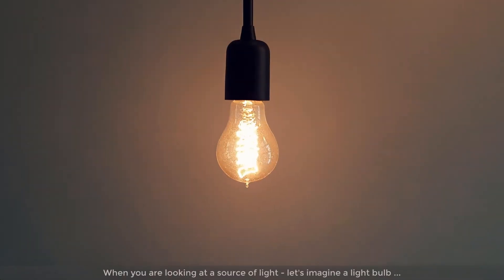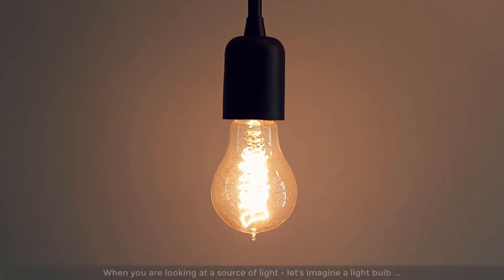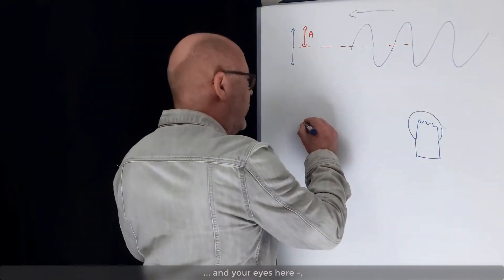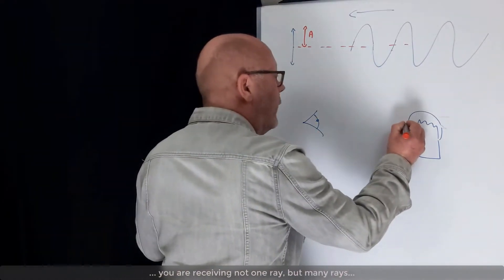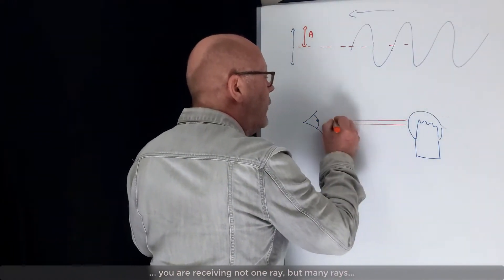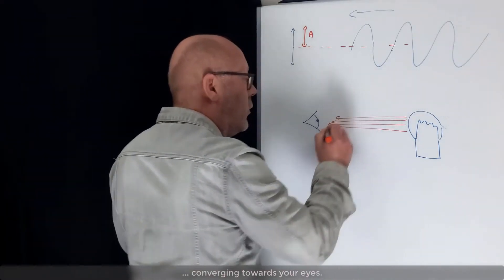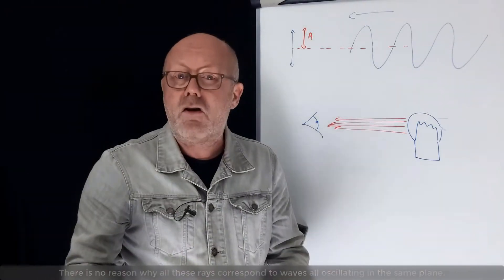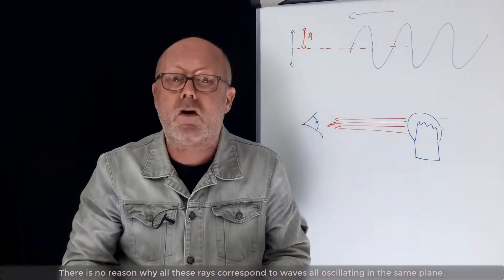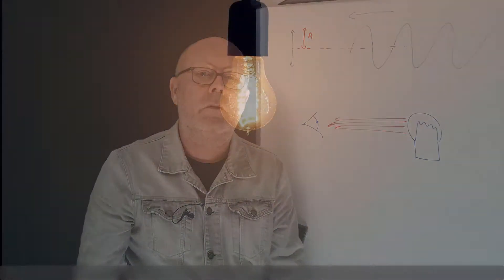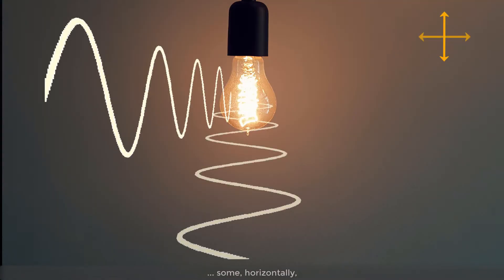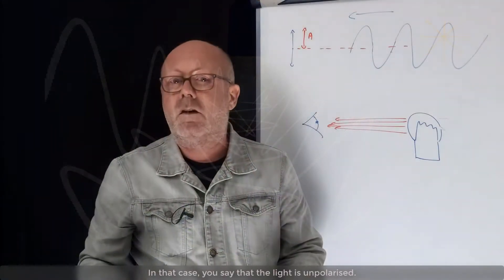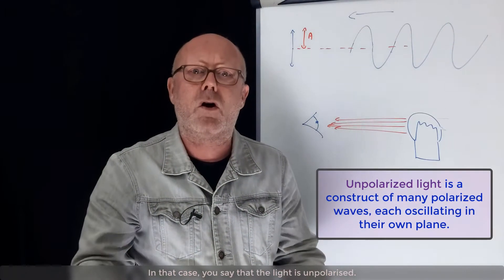So, when you're looking at a source of light, let's imagine a lamp bulb, and your eyes here. You're receiving not one ray, but many rays converging towards your eyes. There is no reason why all these rays correspond to waves all oscillating in the same plane. Some of the waves must be oscillating vertically, some horizontally, and some with an angle. In that case, we say that the light is unpolarized.